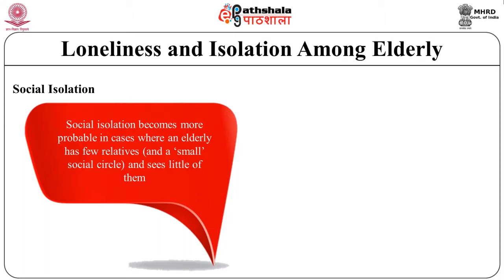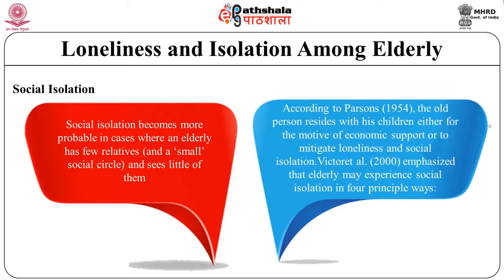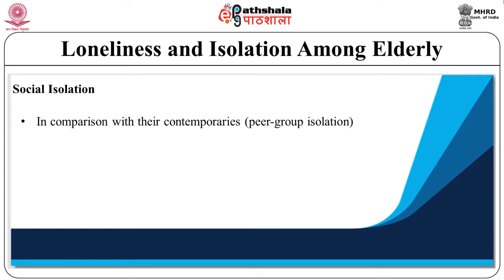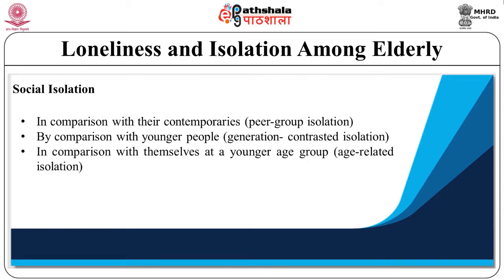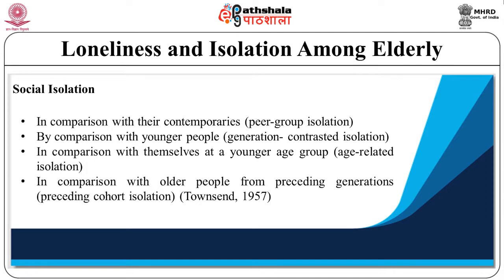Social isolation becomes more probable in cases where an elderly has few relatives and sees little of them. Victor et al. in the year 2000 emphasized that elderly may experience social isolation in four principal ways: first, in comparison with their contemporaries (peer group isolation); secondly, by comparison with younger people (generational contrast isolation); thirdly, in comparison with themselves at a younger age (age-related isolation); and lastly, in comparison with older people from the preceding generation (preceding cohort isolation).